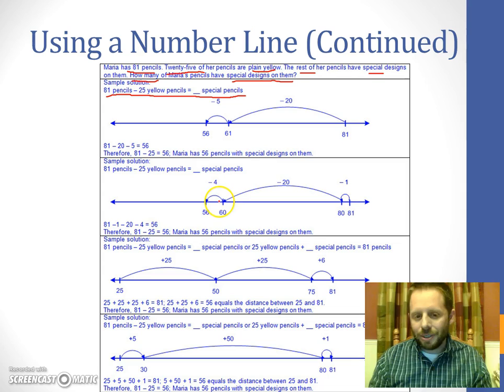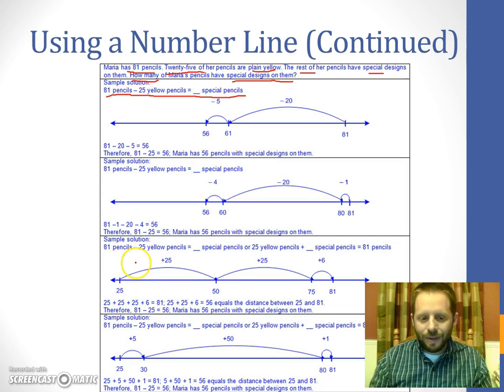Here's another way this time you're starting at 25, you're going to count up to 80. And however much it takes you to count up, that's your missing number. So they did in small jumps. And the same thing here, you see the same thing, they're starting 25 counting up.